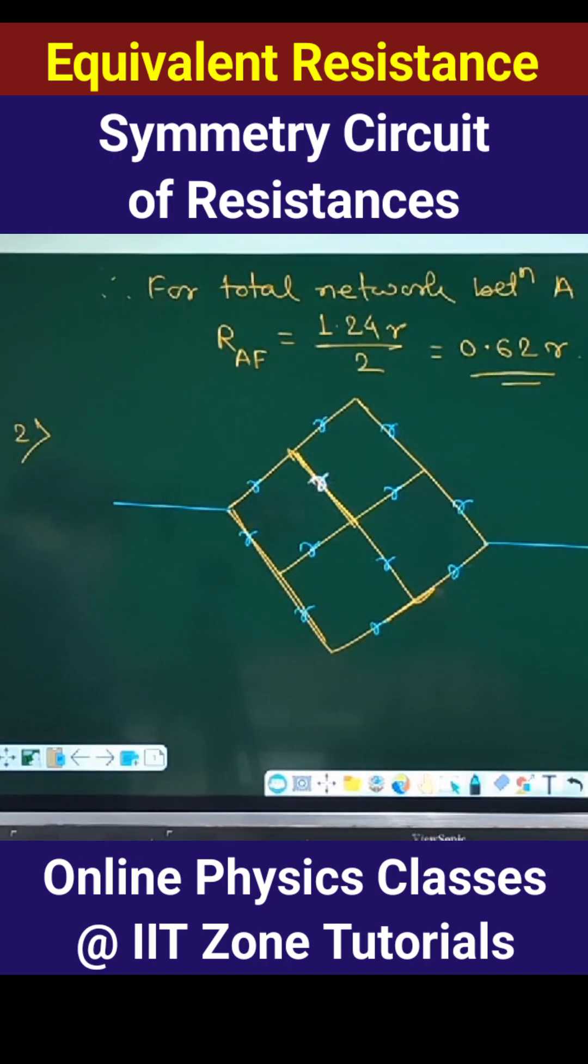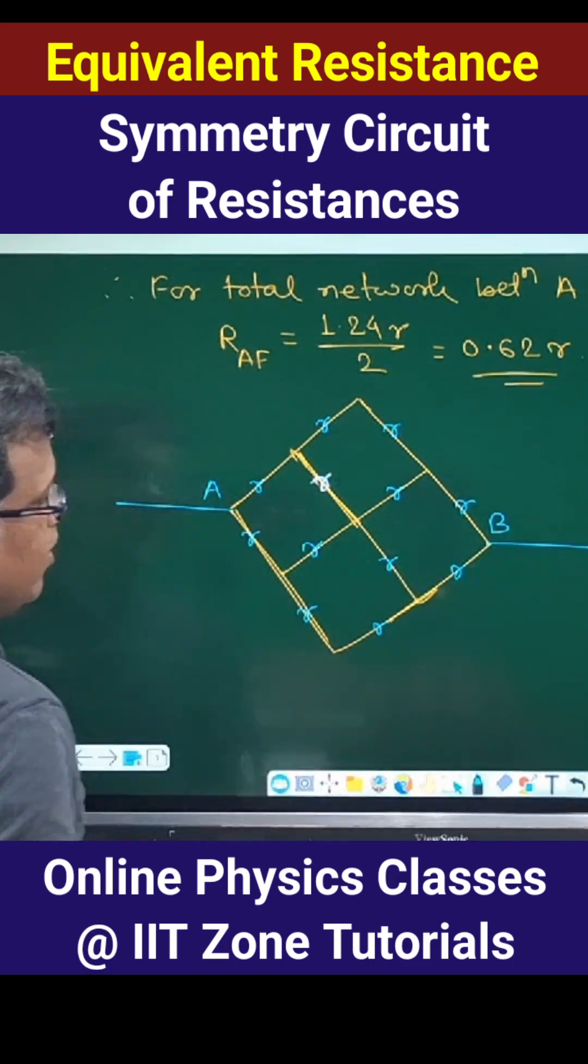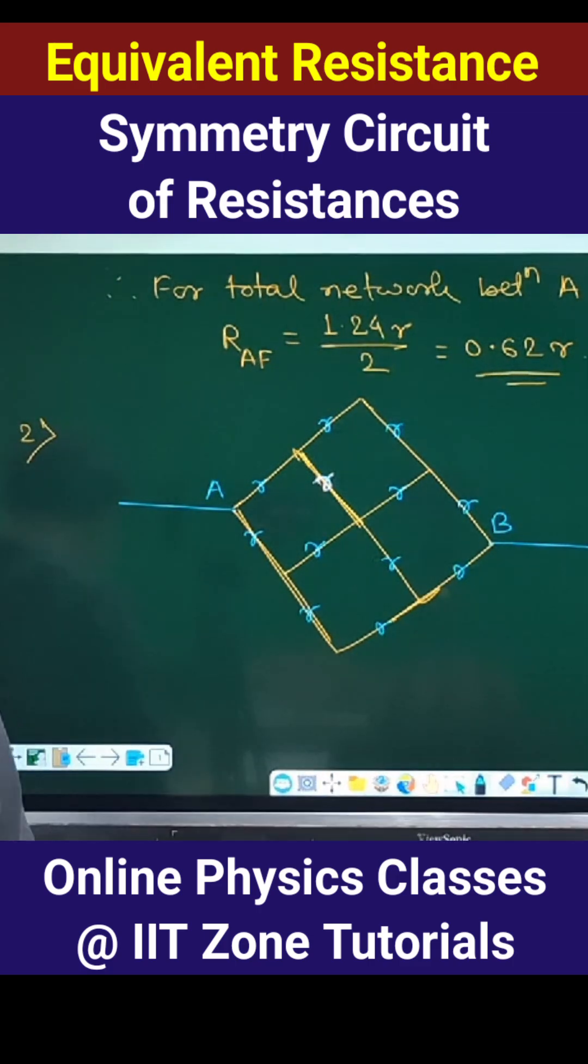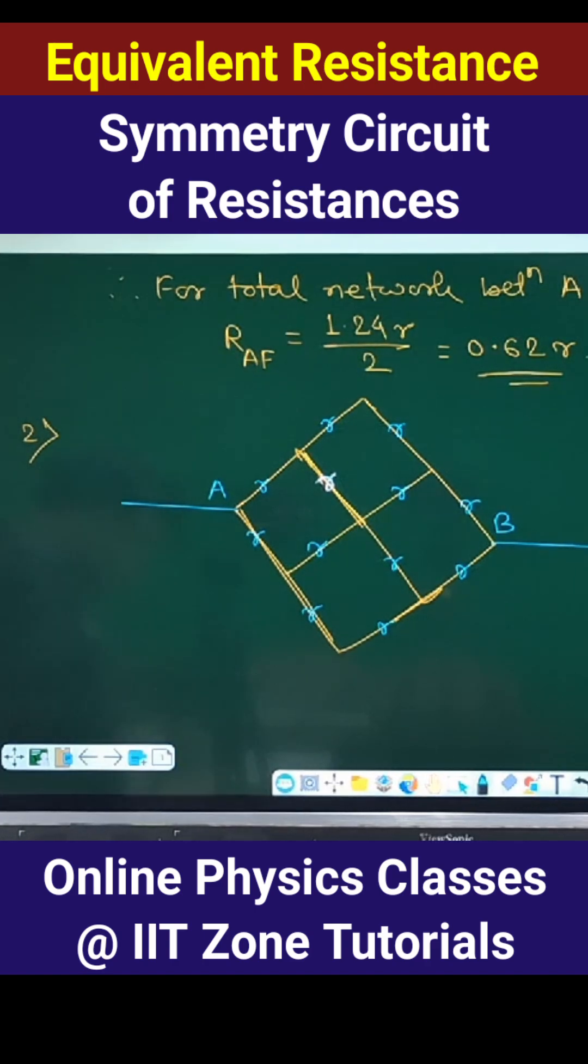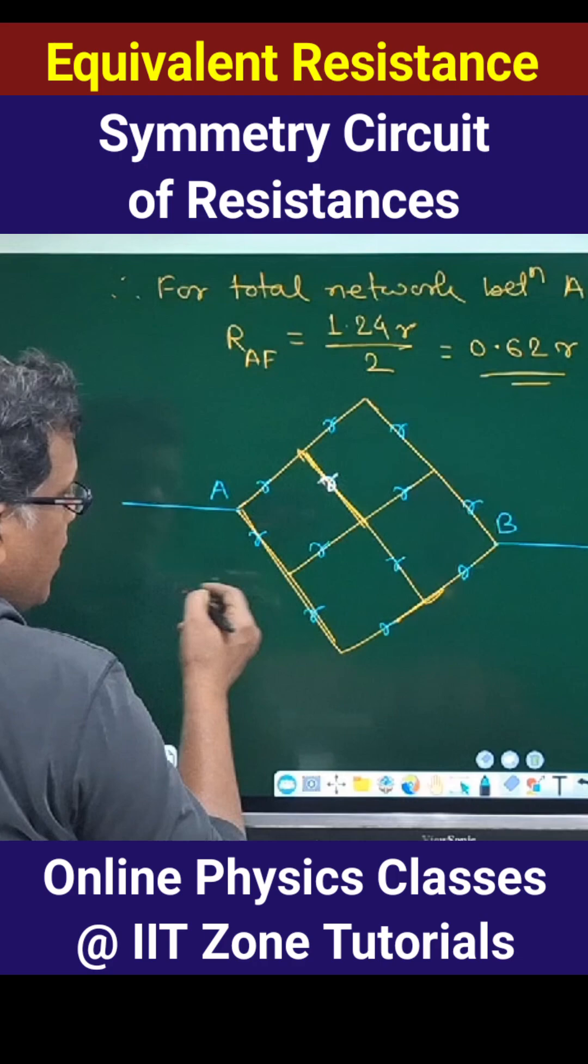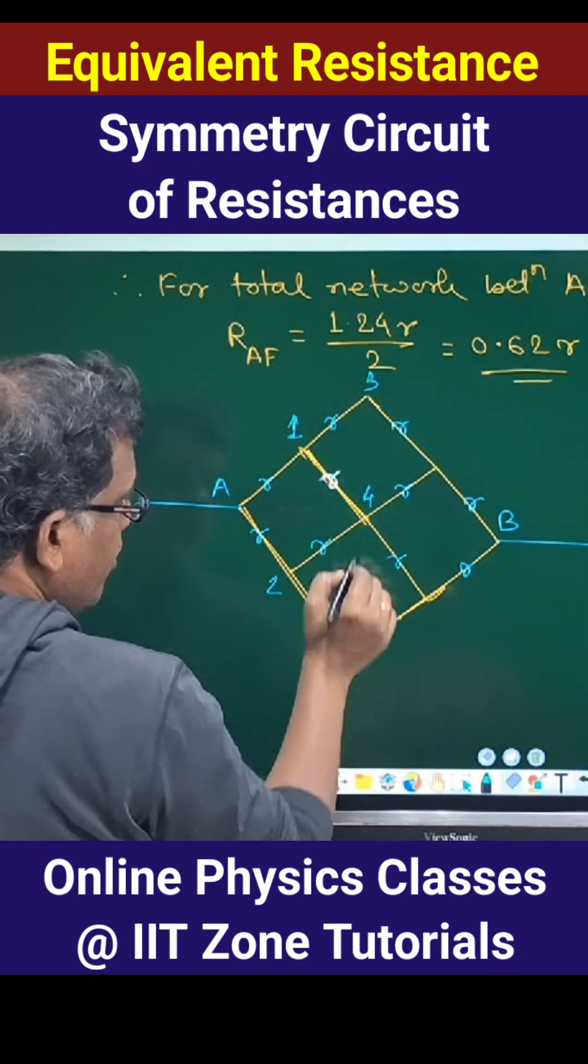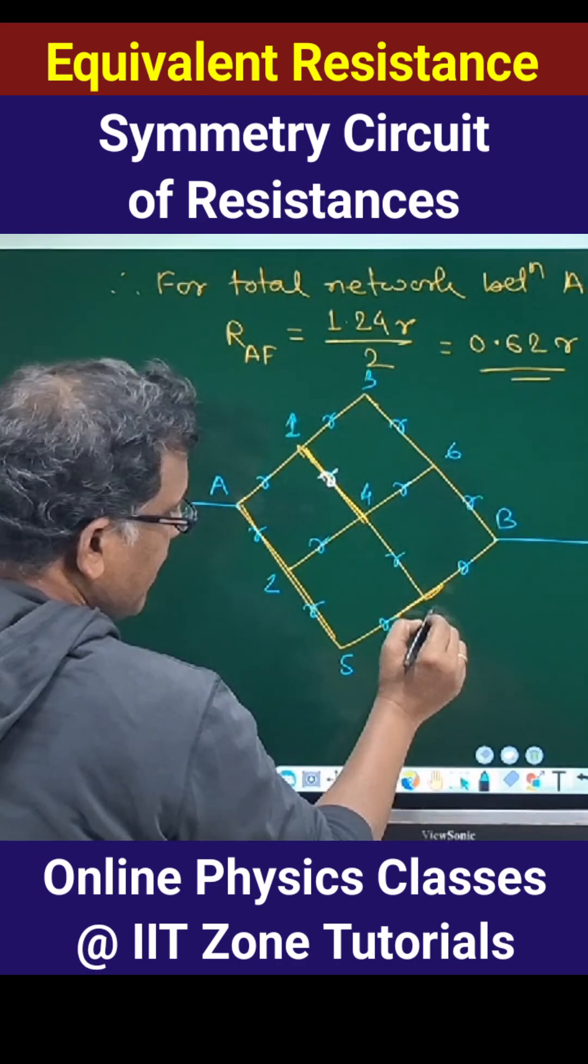This is the given network. If these are the terminals, let a and b, right, each branch is having resistance r each. So what will be the effective resistance between a and b? Find r by. Suppose mark the junctions like, let this is 1, 2, 3, 4, 5, 6, and 7, right?